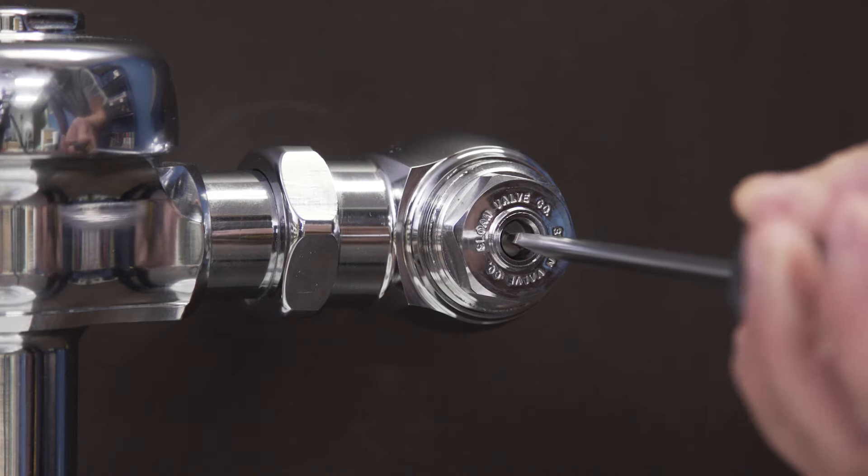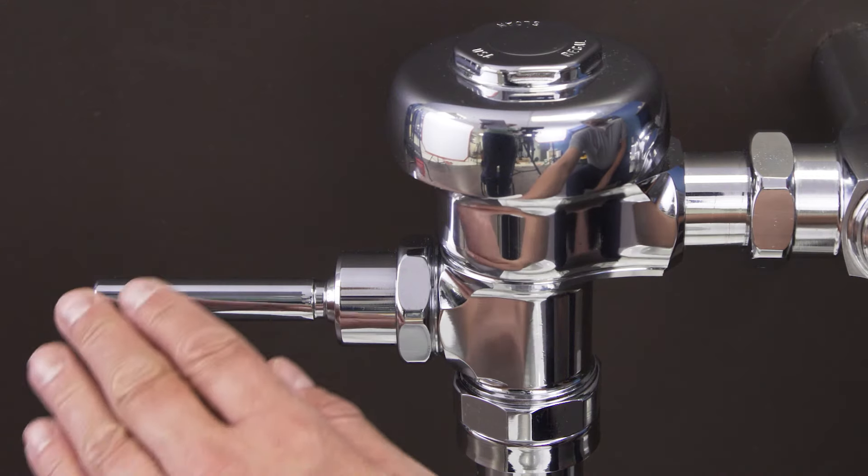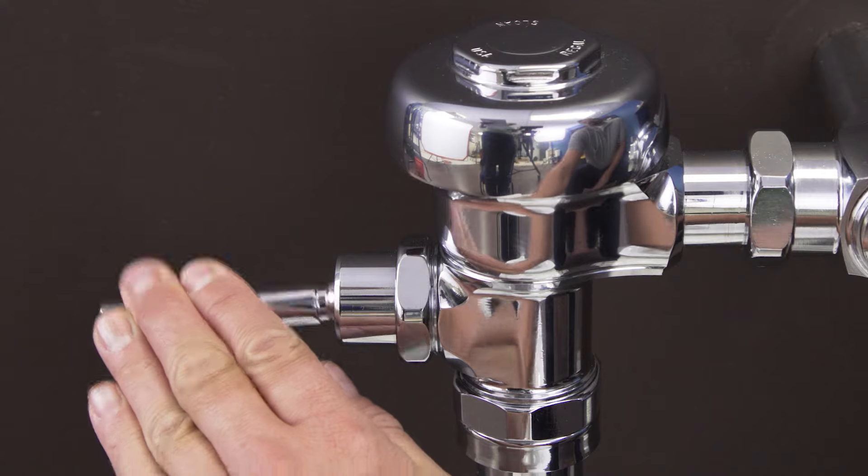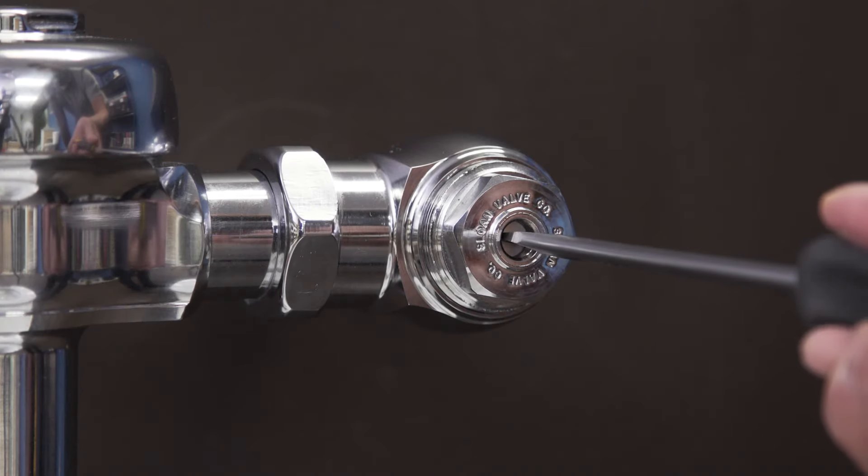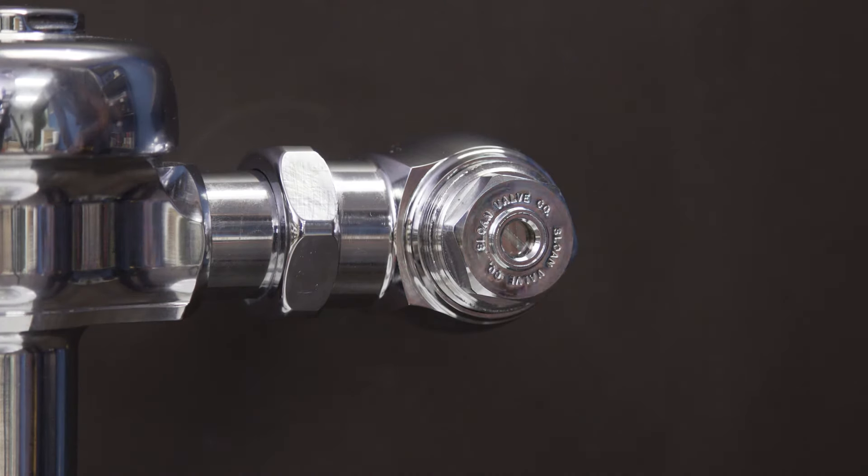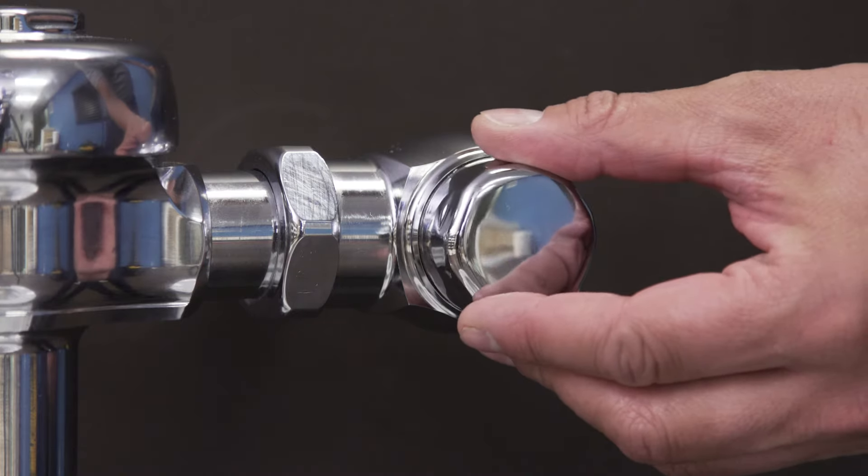Turn on the water by opening the control stop. Now test the flushometer and adjust the control stop until you get a normal flush with a quiet operation. And finally, replace the cap.